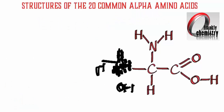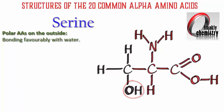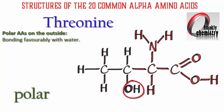Our next amino acid is serine. You can see that its functional group includes the OH hydroxyl group, which can form hydrogen bonds with water molecules. So this is an example of a polar amino acid. These polar amino acids tend to be found mostly on the outside of the polypeptide chains when they fold to form the secondary and tertiary structures of proteins.